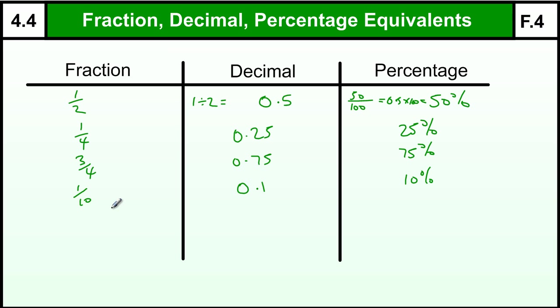And any multiple of that, so if we had three tenths, that would be 0.3 or 30%. Or if we had eight tenths, that's 0.8 or 80%.